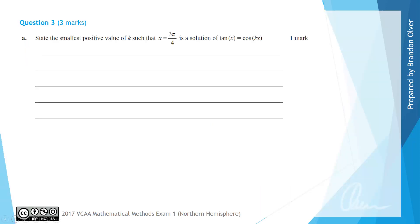So for question 3, we have state the smallest positive value of k such that x equals 3π/4 is a solution of the equation tan(x) equals cos(kx). To approach this question, we're going to start by substituting x equals 3π/4 into that equation. So therefore, we'd have cos(3πk/4) equals tan(3π/4) once we substitute 3π/4 in for x.